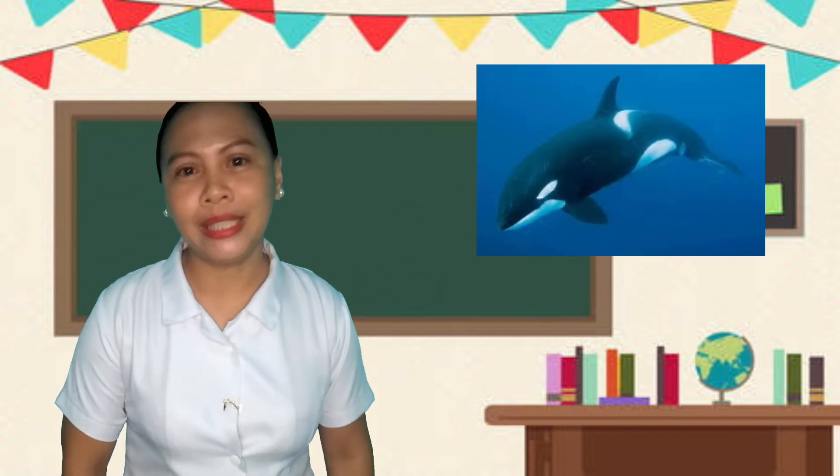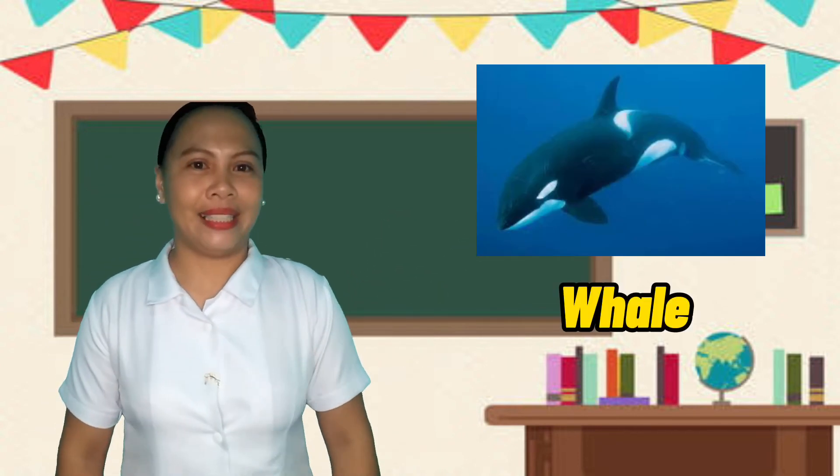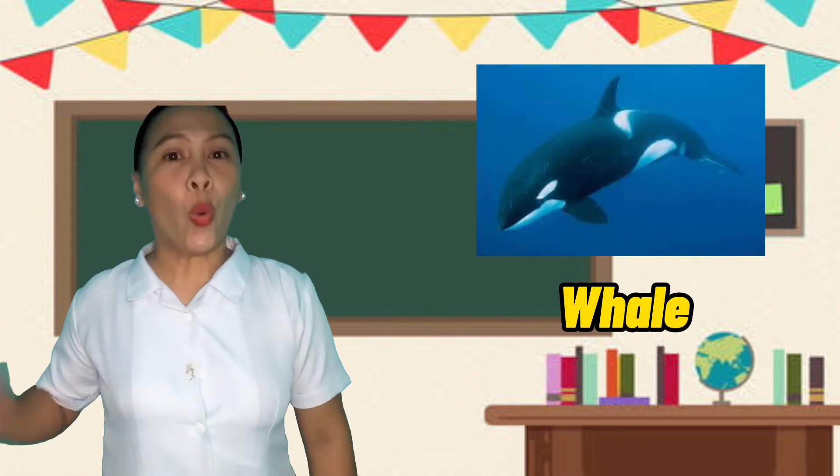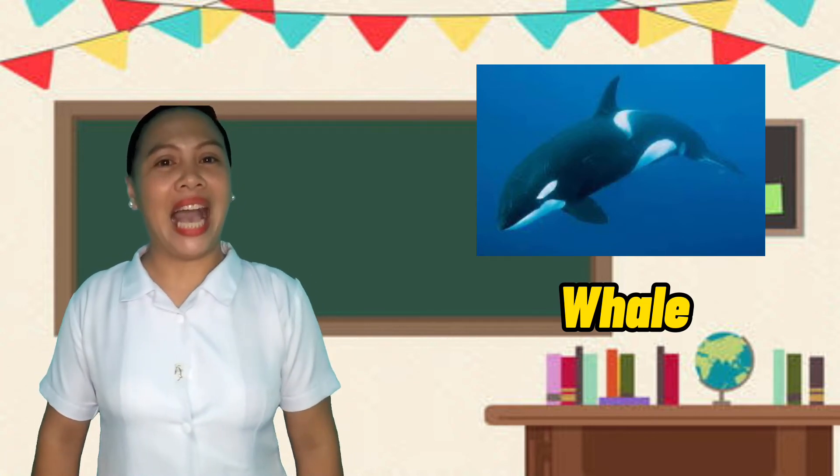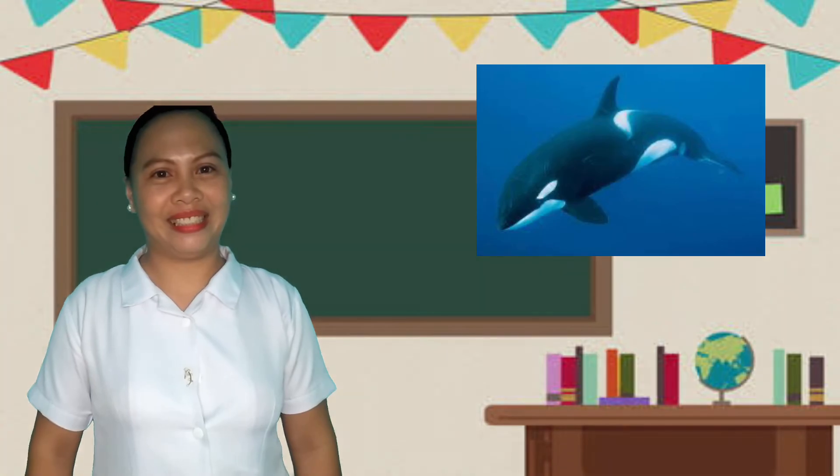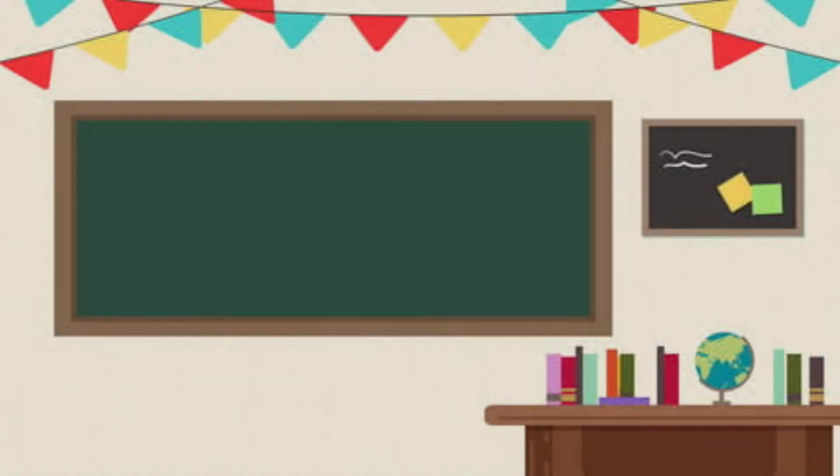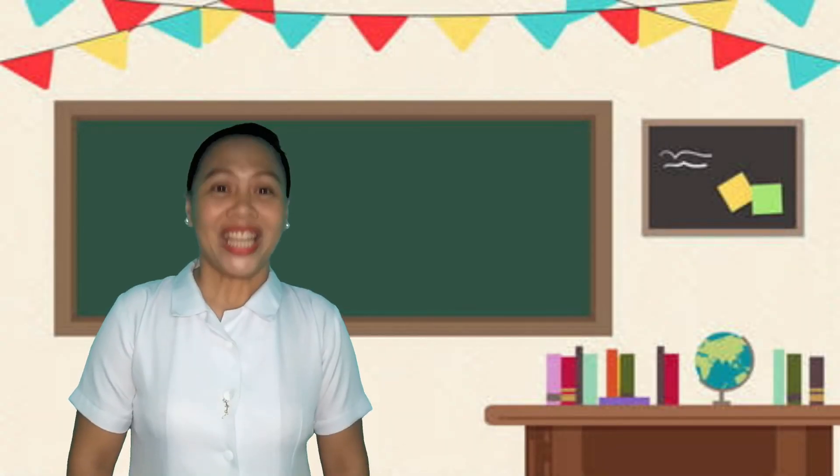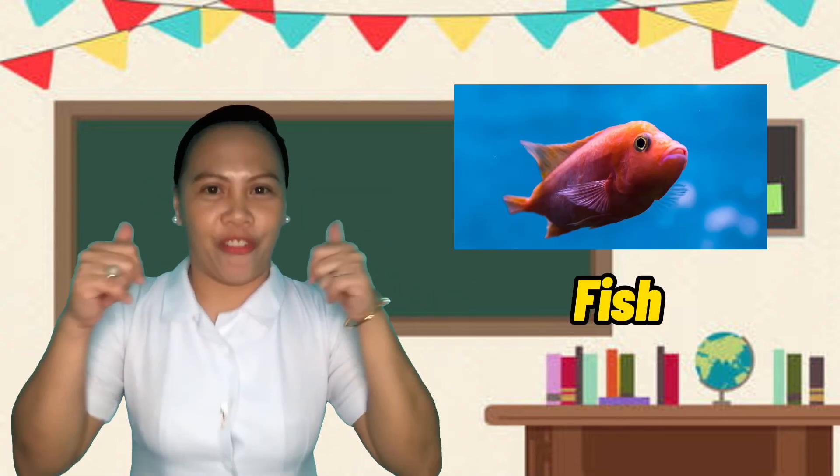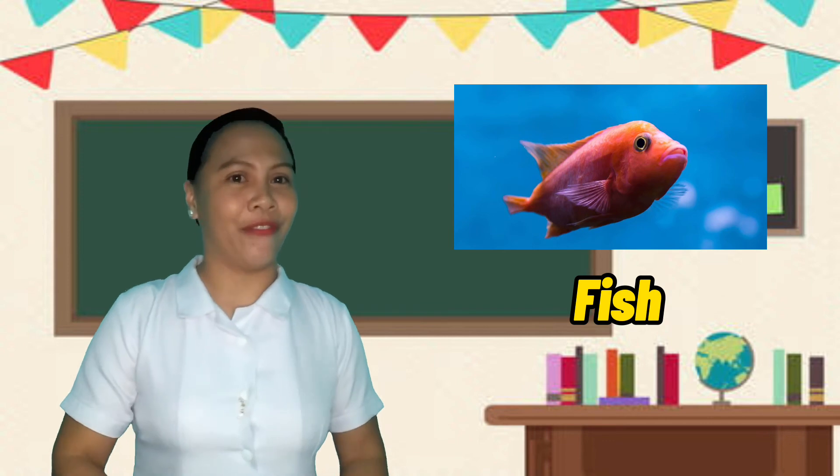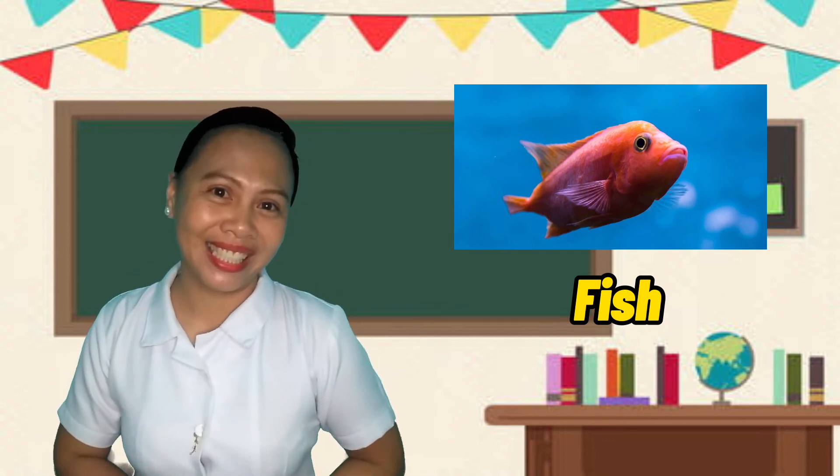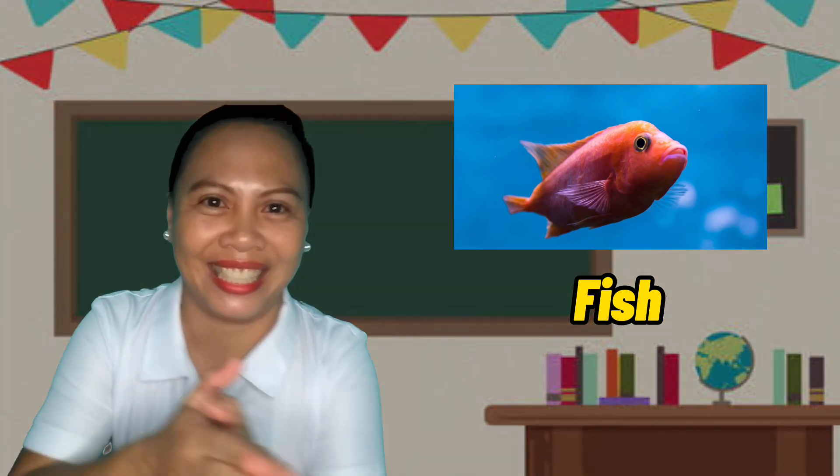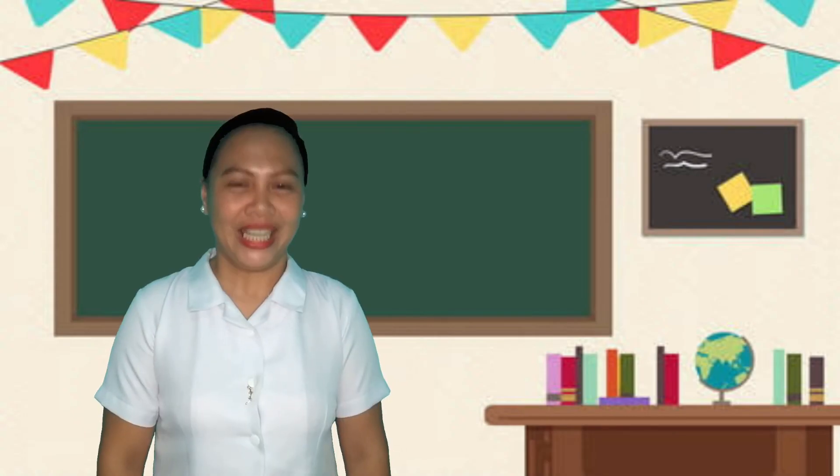First picture. Very good! A whale. Do you know that whales are the largest animal on earth? Next picture. Very good! A fish. And how does a fish swim? Like this.